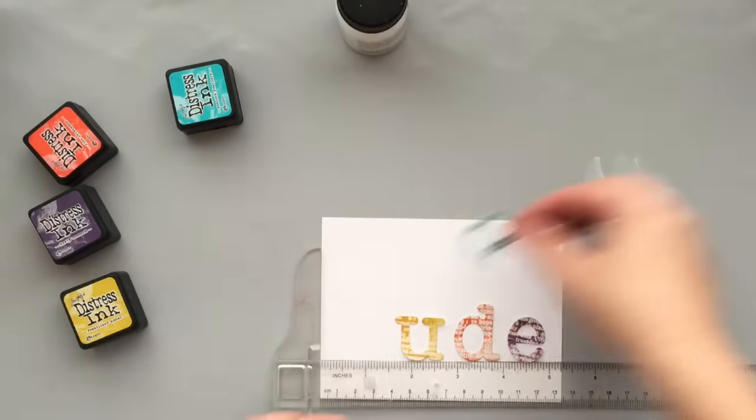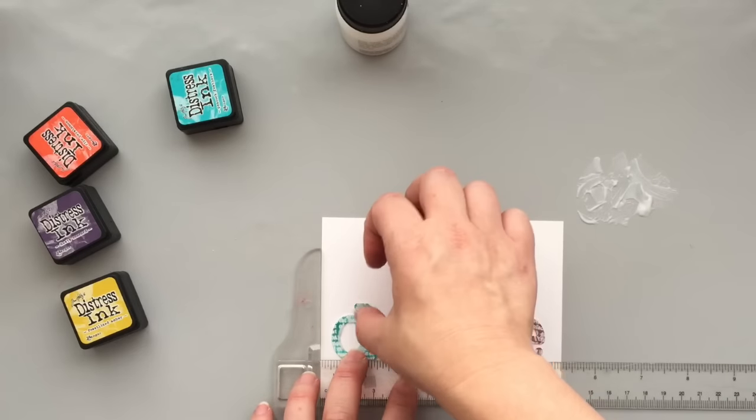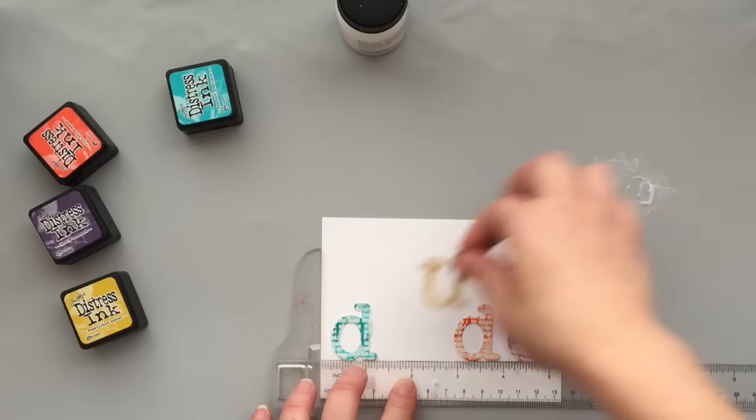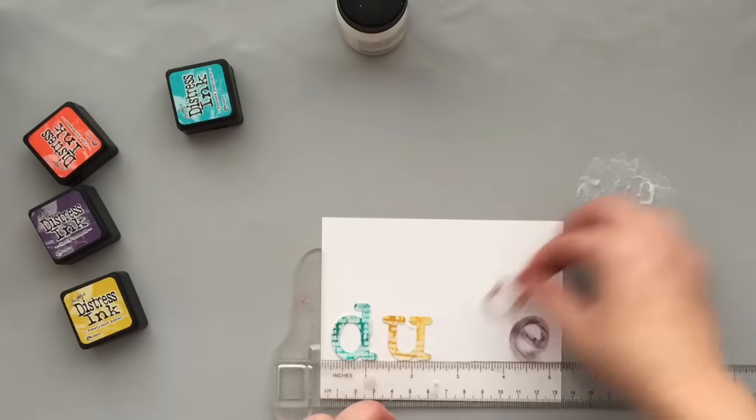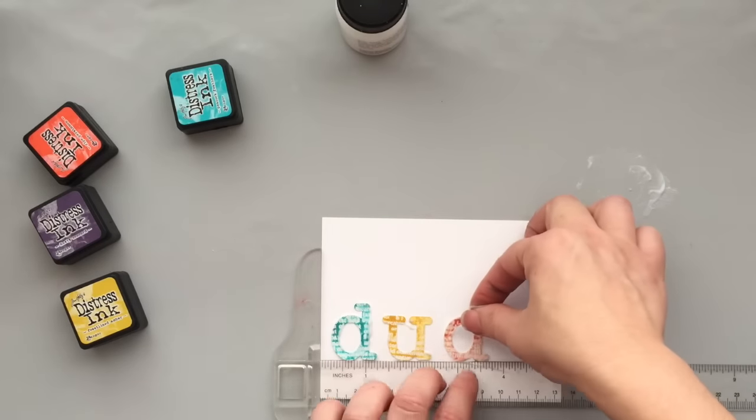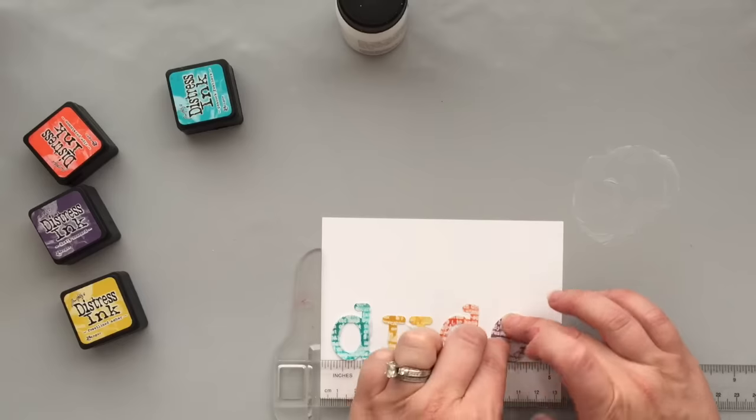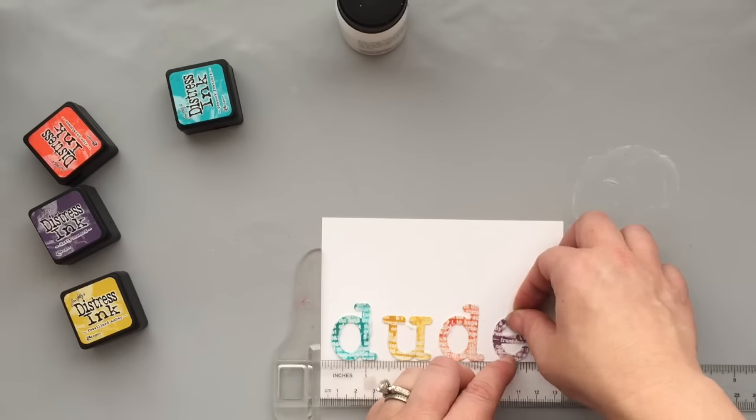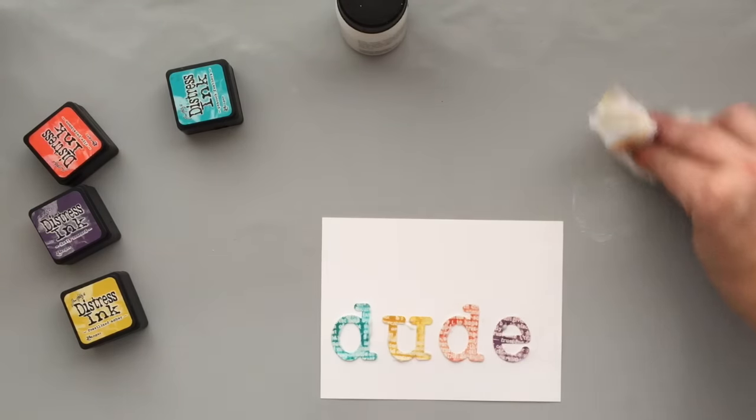This is my favorite adhesive, the Ranger Multi Matte Medium. I just put it directly down onto that Ken Oliver craft mat there and then I'm dipping my letters into the glue. I love this glue for two reasons: it's really strong and it dries completely clear. It is like invisible. I'm so messy with glue. This stuff is oozing out all over the place. You can see it oozing out on the D and the U. But I will wipe some of it away and it's going to dry completely clear. You will never know that's there. It's fantastic.